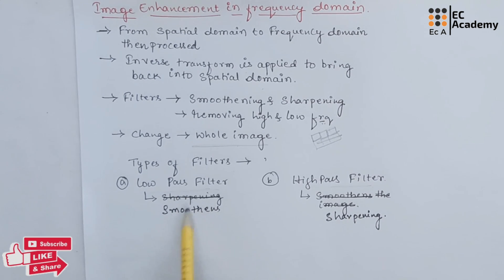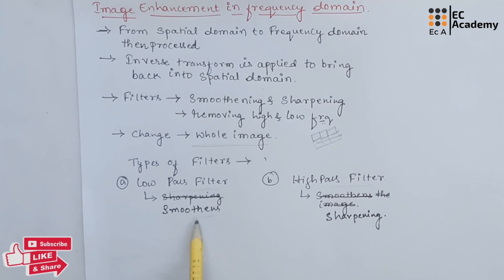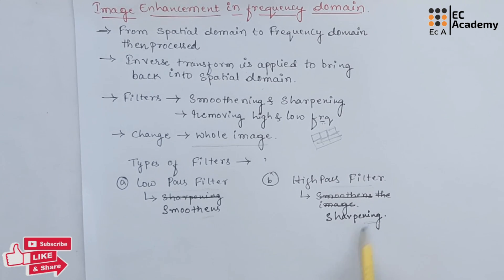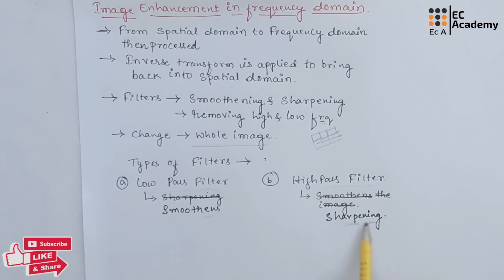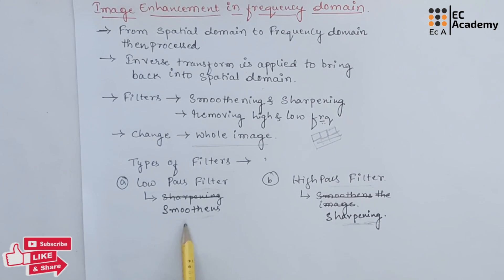The low pass filter is mainly used for smoothening the image, which is nothing but blurring the image. High pass filter is basically used for sharpening the image. Since it is sharpening the image, after processing the image will not have much of the background. So, low pass filter is also used to remove the noise from the image.